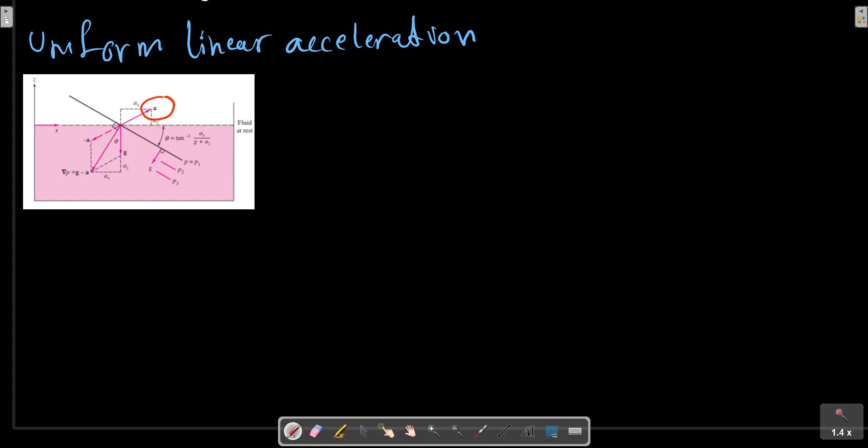The parallelogram sum of g and a gives the direction of pressure gradient or greatest rate of increase of p. The surface of constant pressure must be perpendicular to this and tilted at a downward angle theta equals Ax over g plus Az. One of these tilted lines is the free surface, which is formed by the requirement that the fluid retain its volume unless it is spilled out.